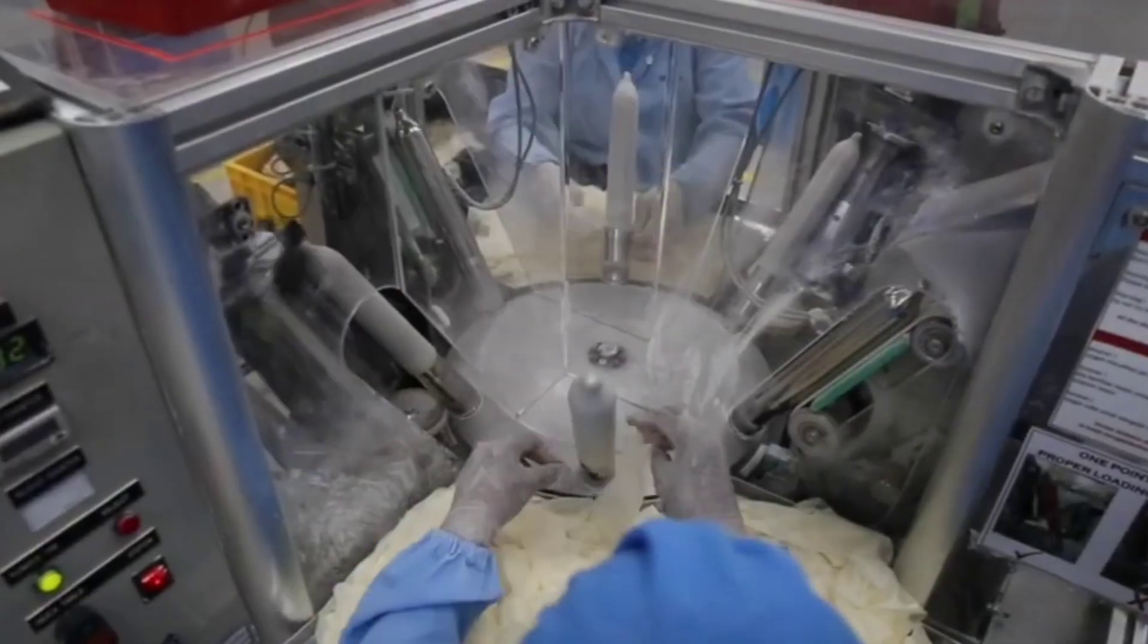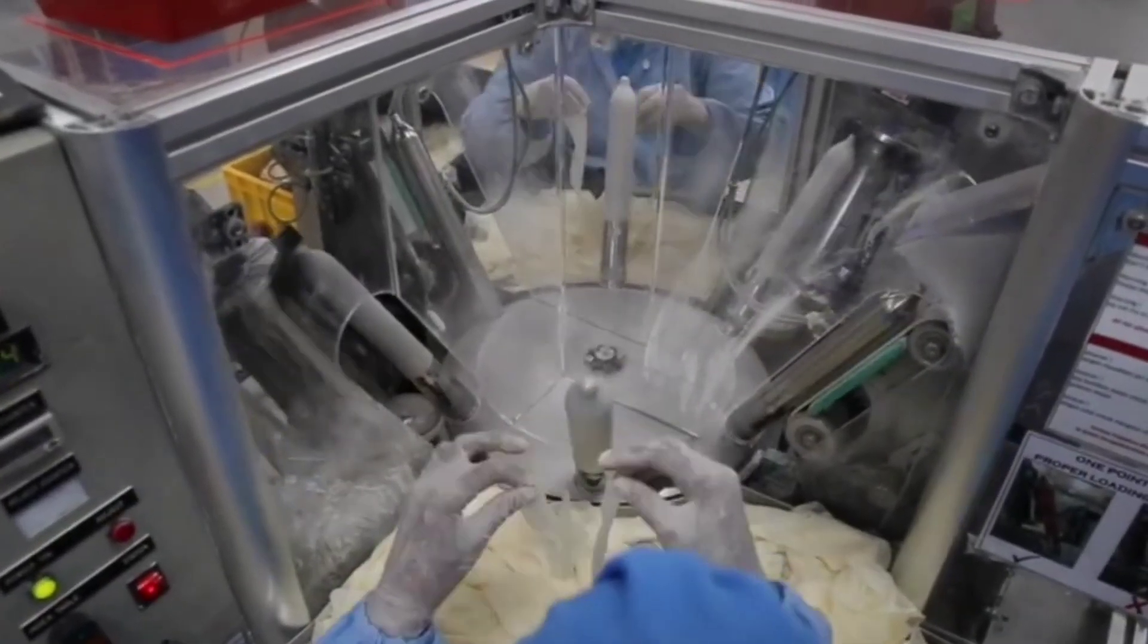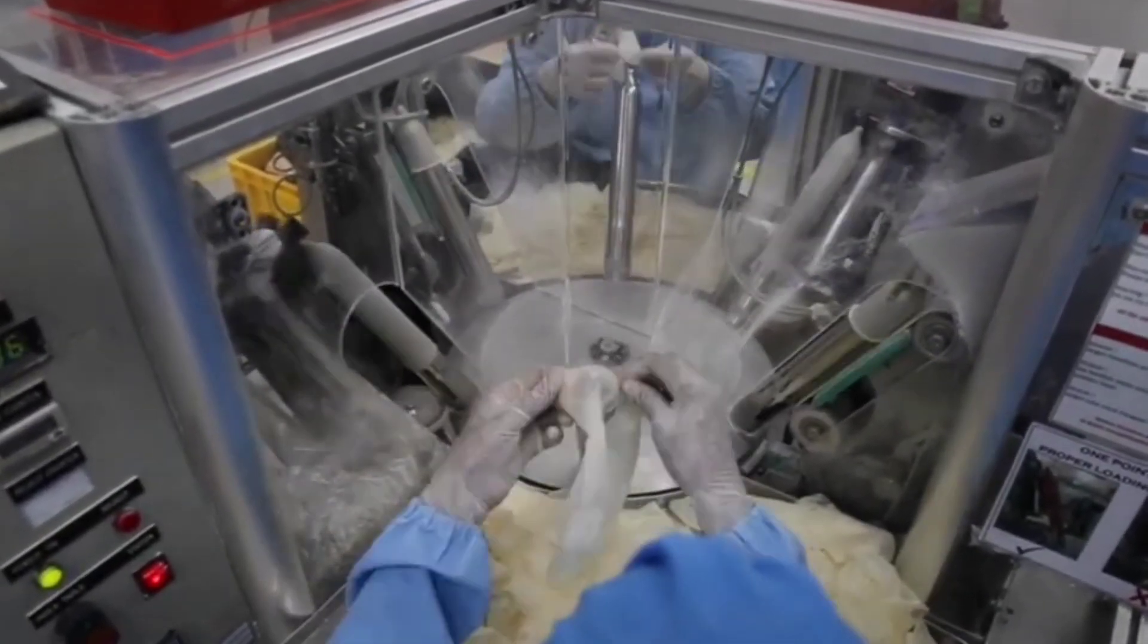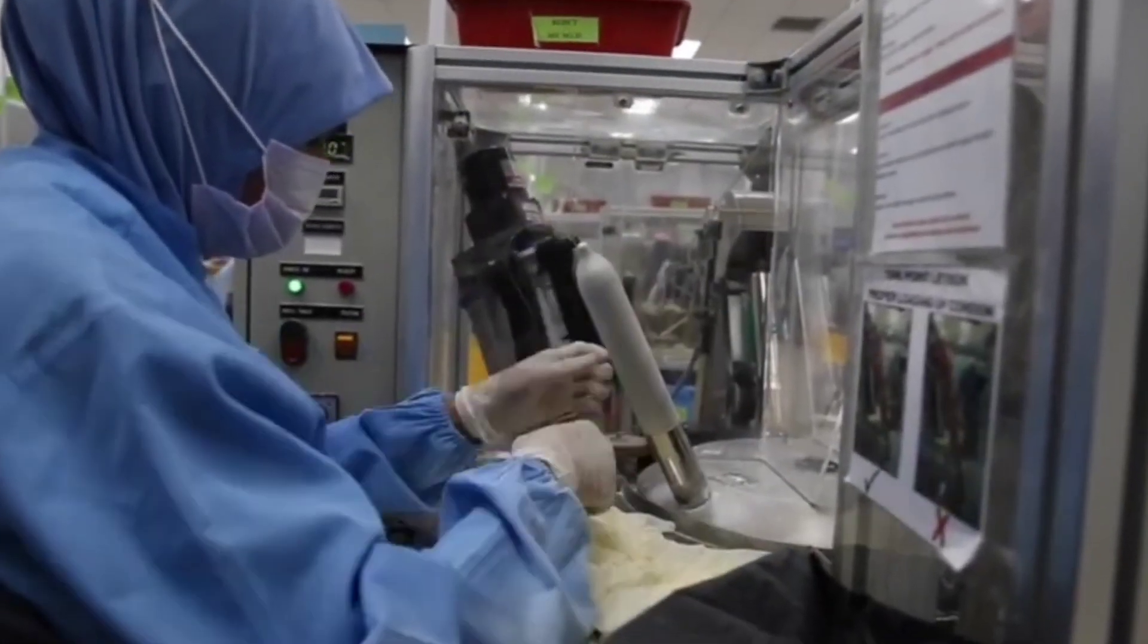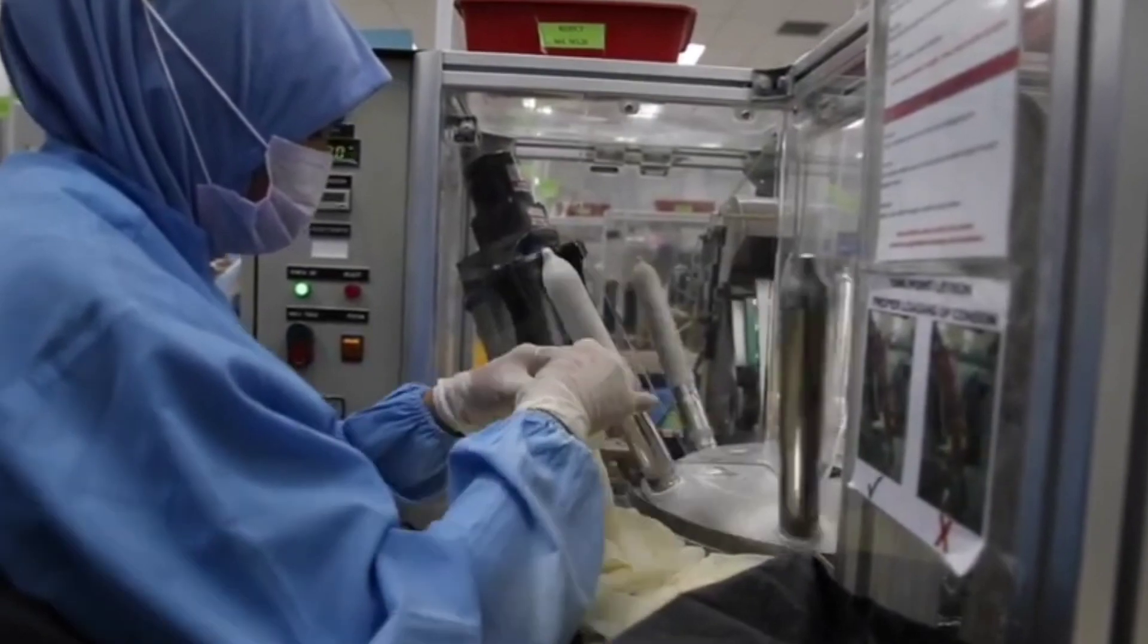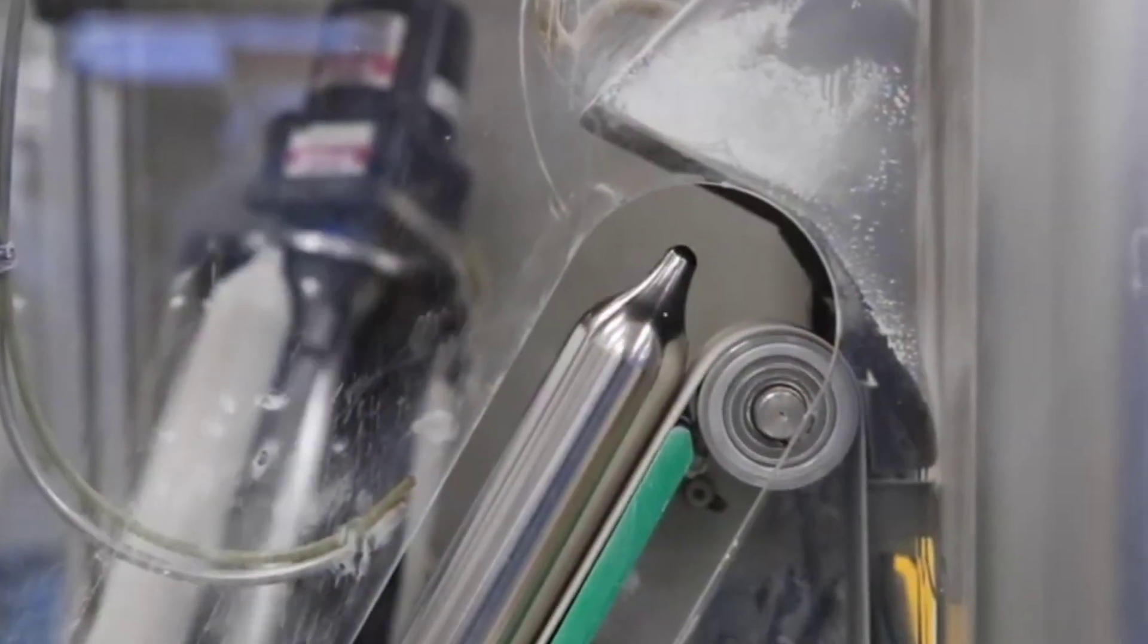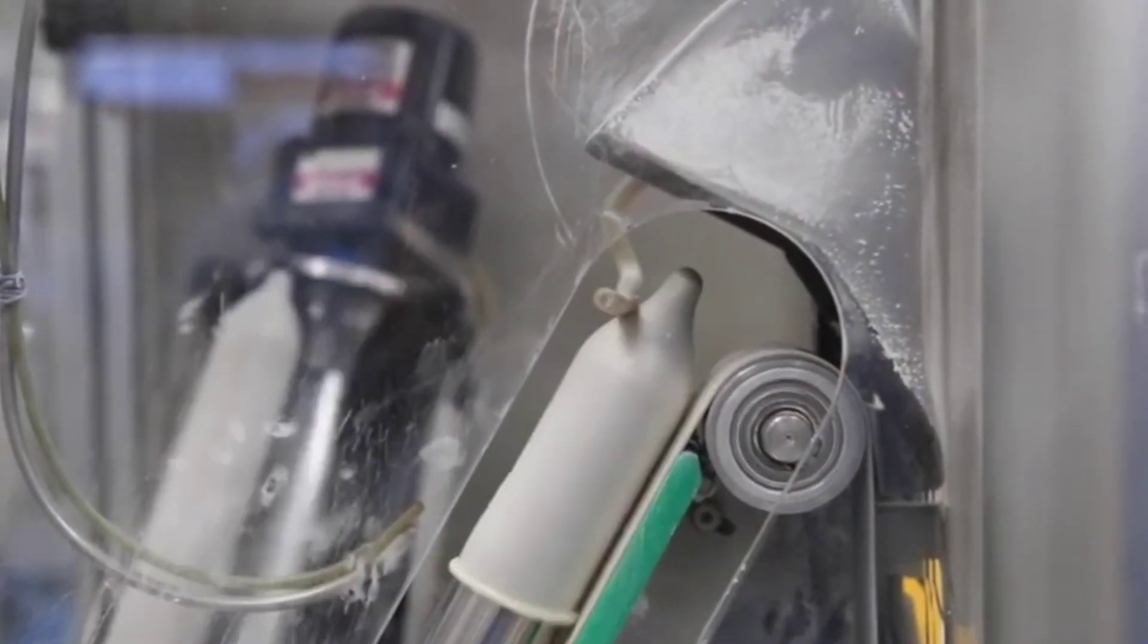Condoms are also tested electronically. This involves mounting each condom on a charged stainless steel mandrel. The mandrel is passed over by a soft conductive brush. If pin holes are present, a circuit will establish with the mandrel and the machine will automatically reject the condom.